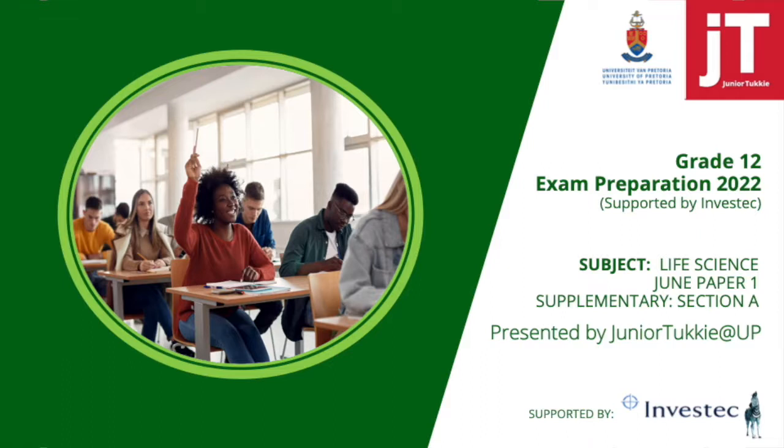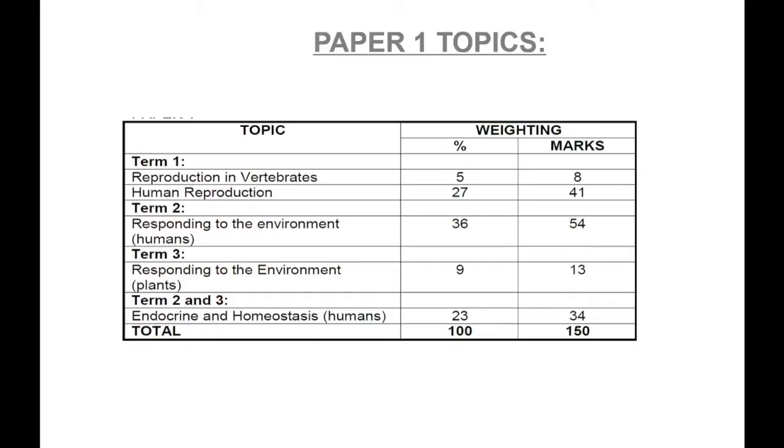Before we get down to looking at the exam paper, let us look at what will be in the Life Sciences Paper 1 at the end of the year and in your prelims. Let us look at the Paper 1 topics. This is work that will be covered in Term 1, 2 and 3.